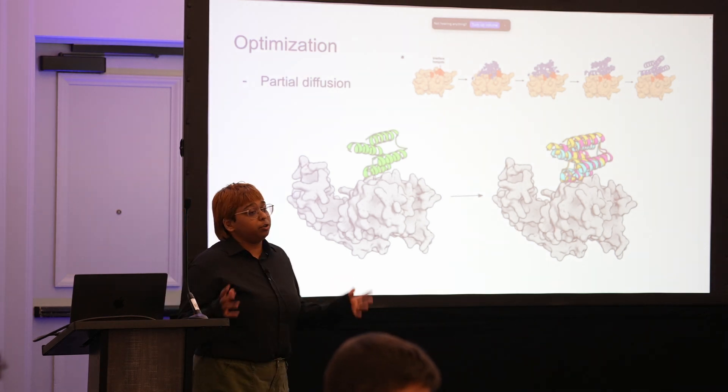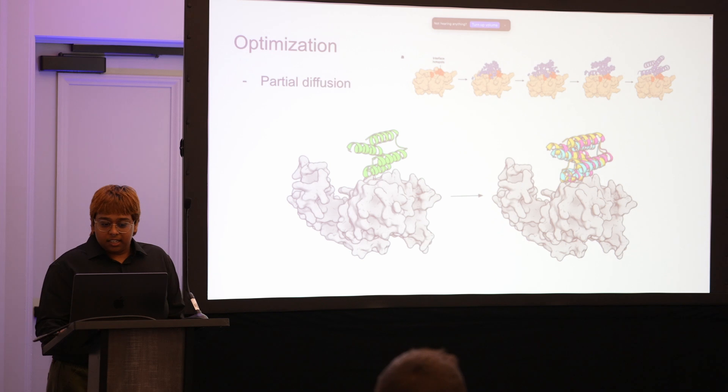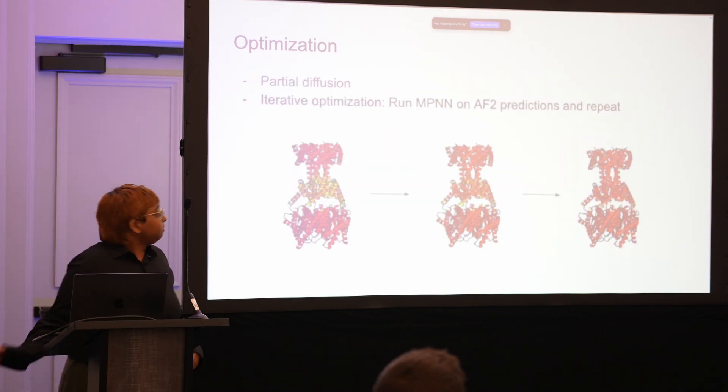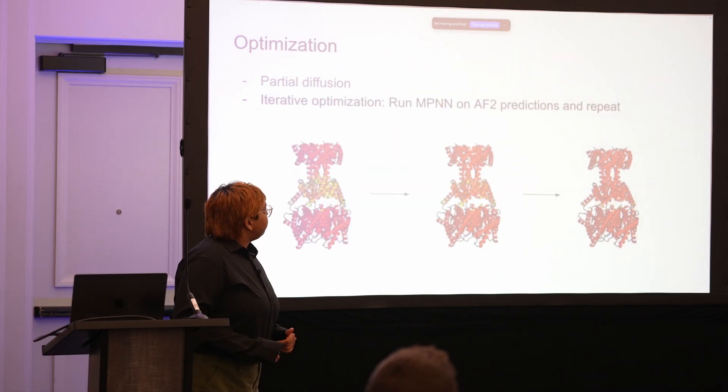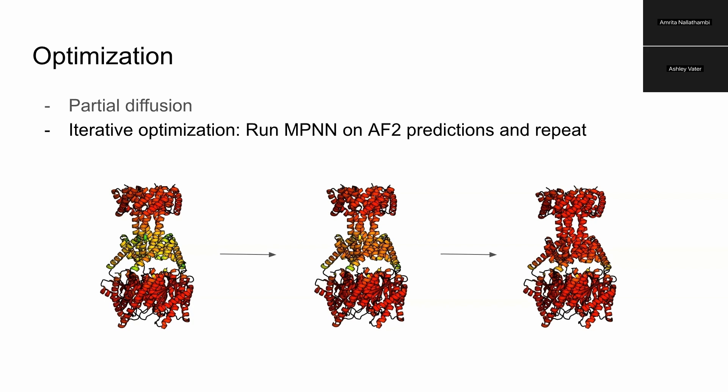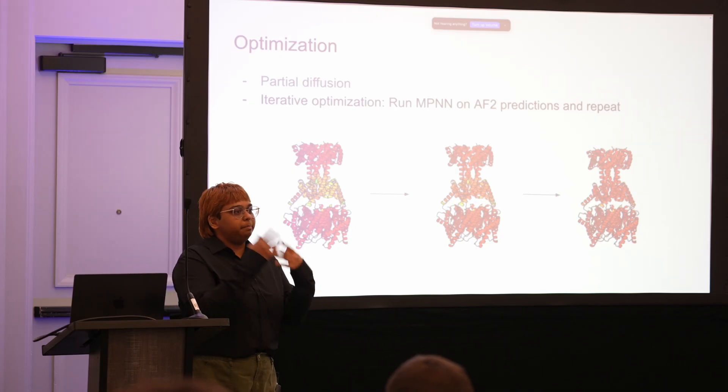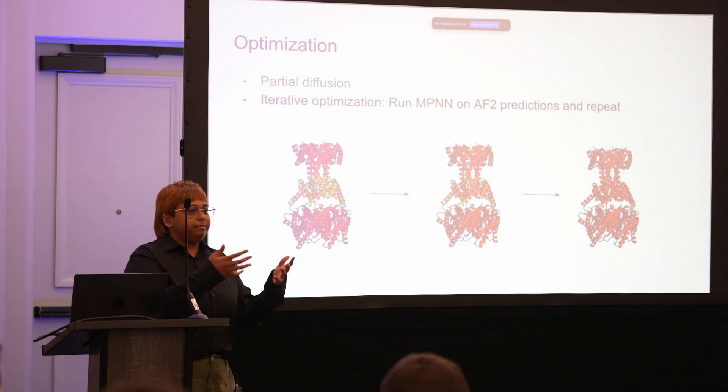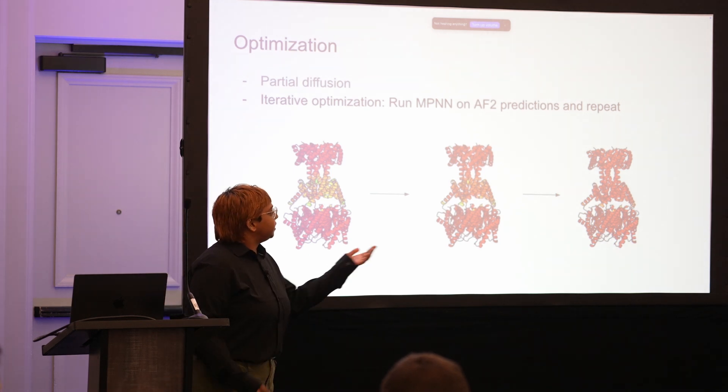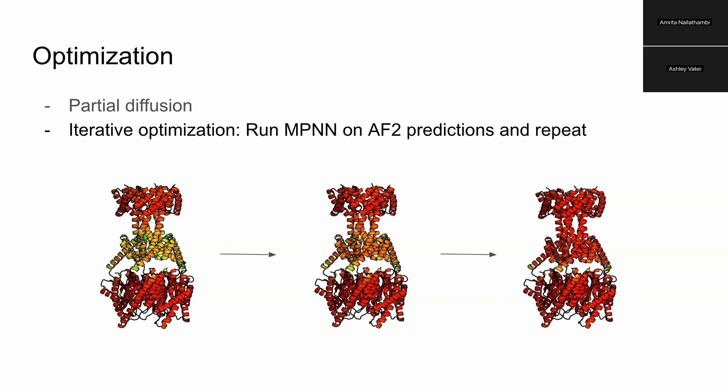The other one is iterative optimization. Here I'm showing a protein that Matt has iteratively optimized. Essentially what you want to do here is take the predictions from your AlphaFold high throughput run, get the best few, and then run MPNN on them again and then refold. Run MPNN on the best ones from that pool, refold, and keep doing this until you have something that AlphaFold is pretty confident with.